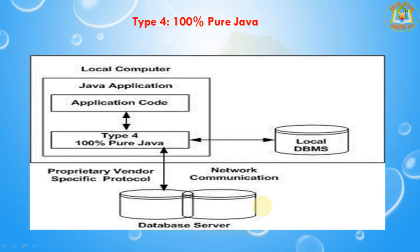Next I am going to discuss about Type 4 — the 100% Pure Java driver. In Type 4, a pure Java-based driver communicates directly with the vendor database through a socket connection. This is the highest performance driver available and it is usually provided by the vendor itself. This kind of driver is extremely flexible — you don't need to install special software on the client or server, and these drivers can be downloaded dynamically. For example, the MySQL Connector/J driver is a Type 4 driver.